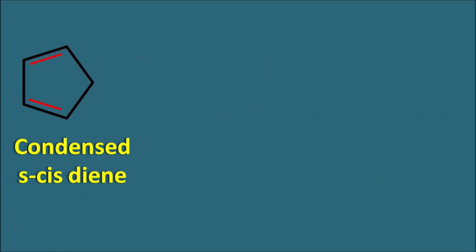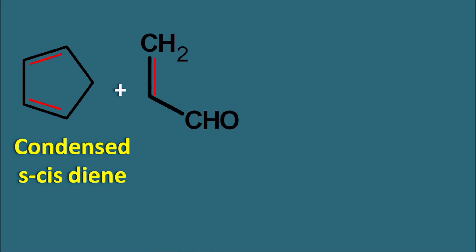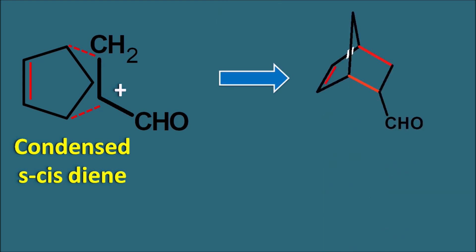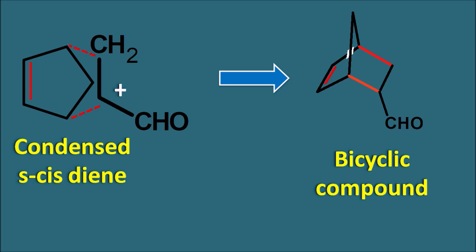Let us take the condensed S-cis diene. As discussed, it can undergo the Diels-Alder reaction very easily. When it reacts with a dienophile, it undergoes the Diels-Alder reaction: the bonds shift and sigma bonds are formed, producing a bicyclic compound. So condensed dienes, when they undergo the Diels-Alder reaction, give bridged bicyclic compounds. Now, what is the configuration of the aldehyde functional group in the product? This reaction can produce two products with respect to the configuration of the aldehyde.